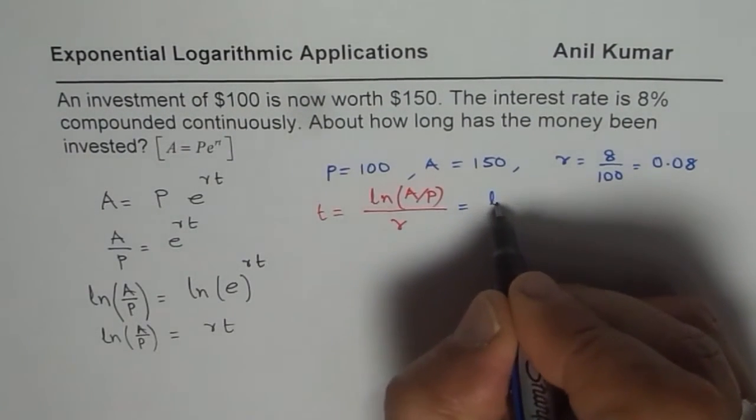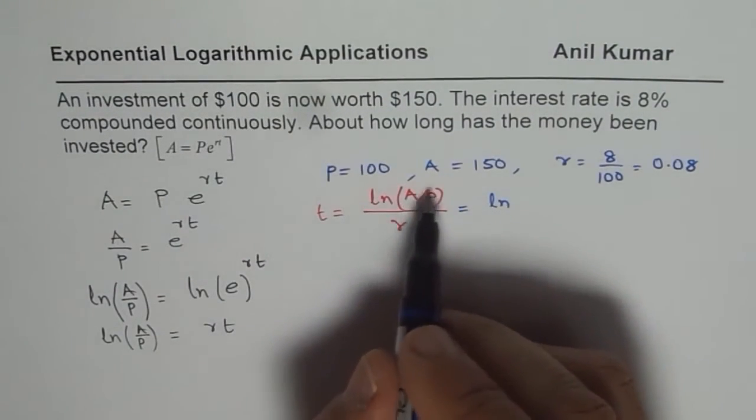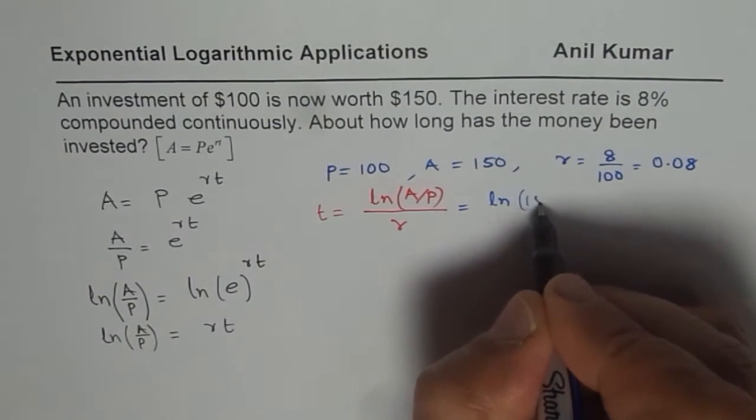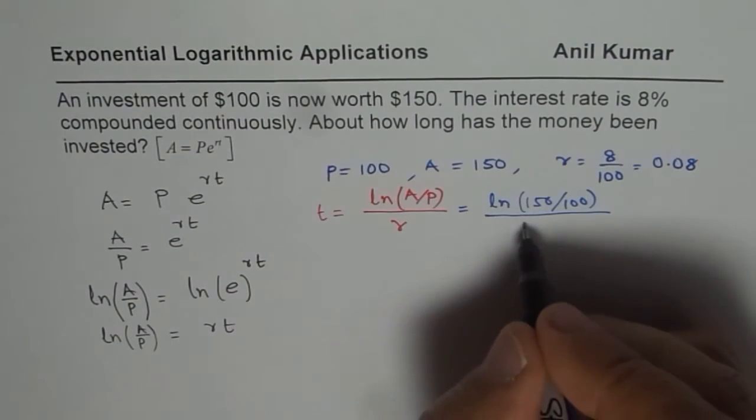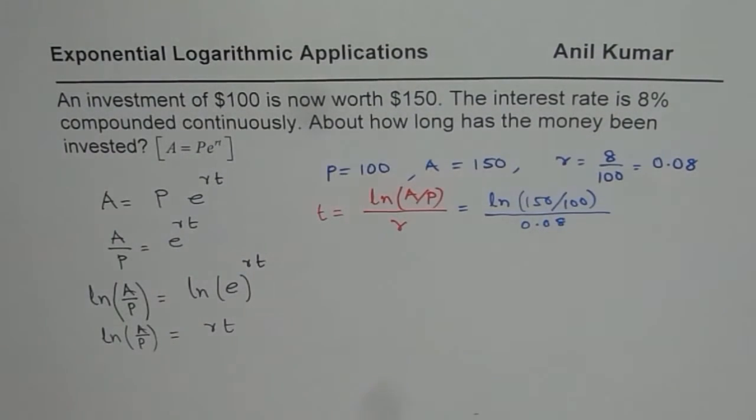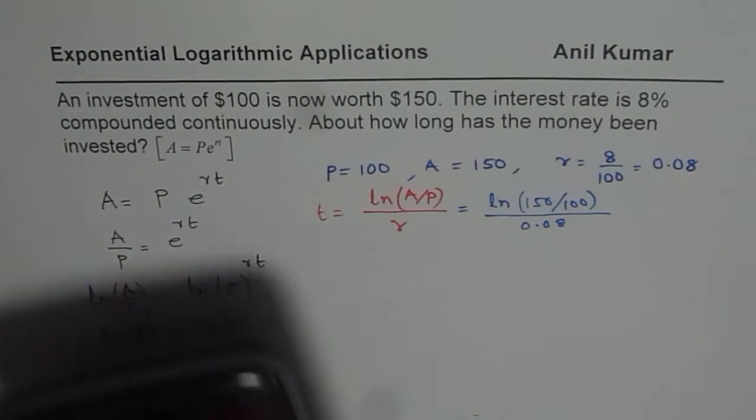So we have ln A is 150, so we have 150 divided by 100 divided by R, which is 0.08. So we can use calculator to find this answer.